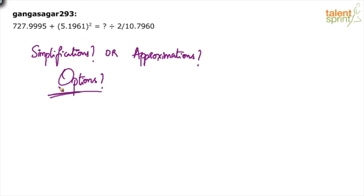But anyway, it looks like this is an approximations based question because we have like 727.9995 and then we have 10.7960. Usually these things are given under approximations and you have to give the options here. Without options, all these are difficult.